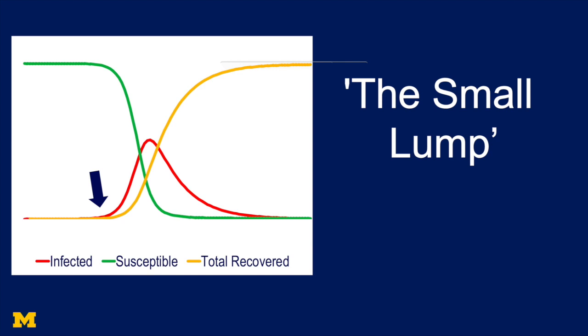From an epidemiological standpoint, those increases, that increase in the red line, the increase in the number of infected, is like the small lump you might see in a CAT scan. It's the hint that something's happening that could grow really, really fast.